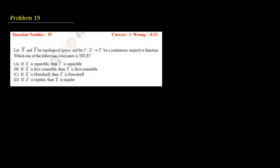This is problem number 19, where there are two topological spaces X and Y and a continuous surjective function F from X to Y is given. We have to determine which properties are invariant under the map F: whether if X is separable then Y is separable, if X is first countable then Y is first countable, if X is Hausdorff then Y is Hausdorff, and if X is regular then Y is regular.